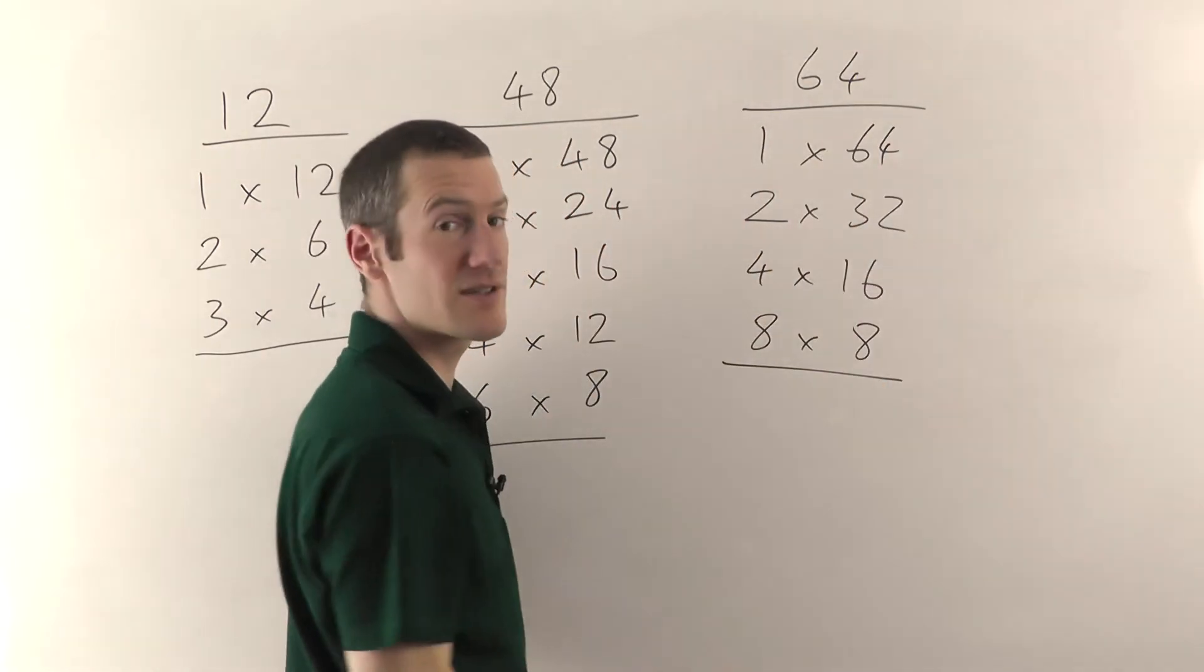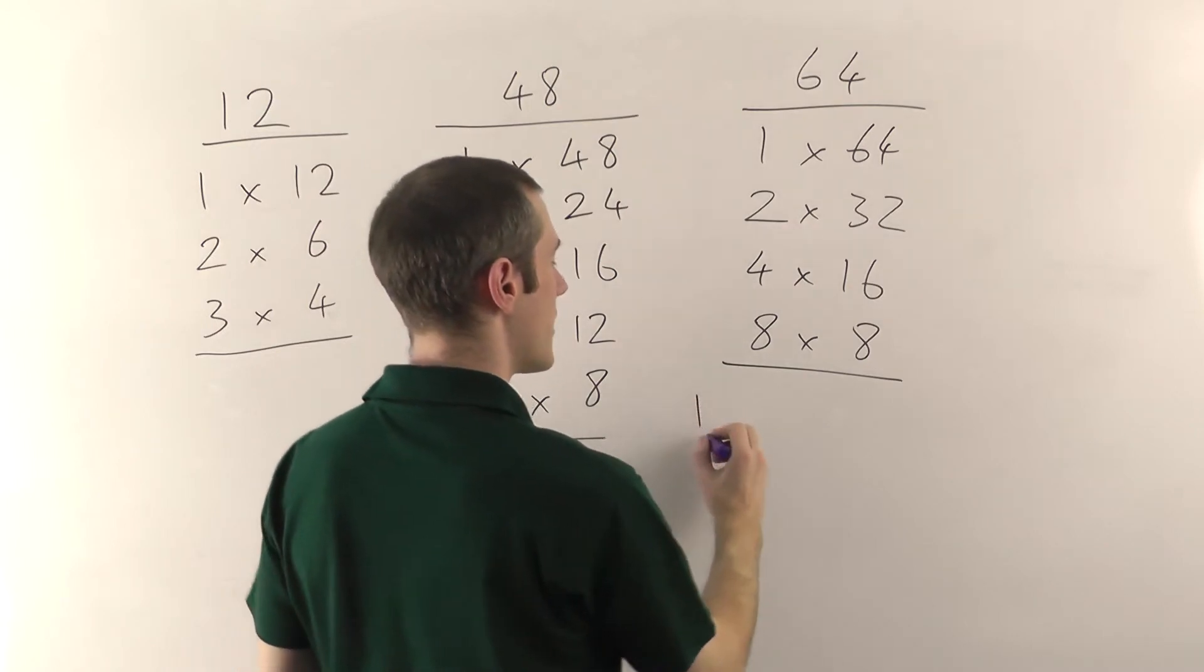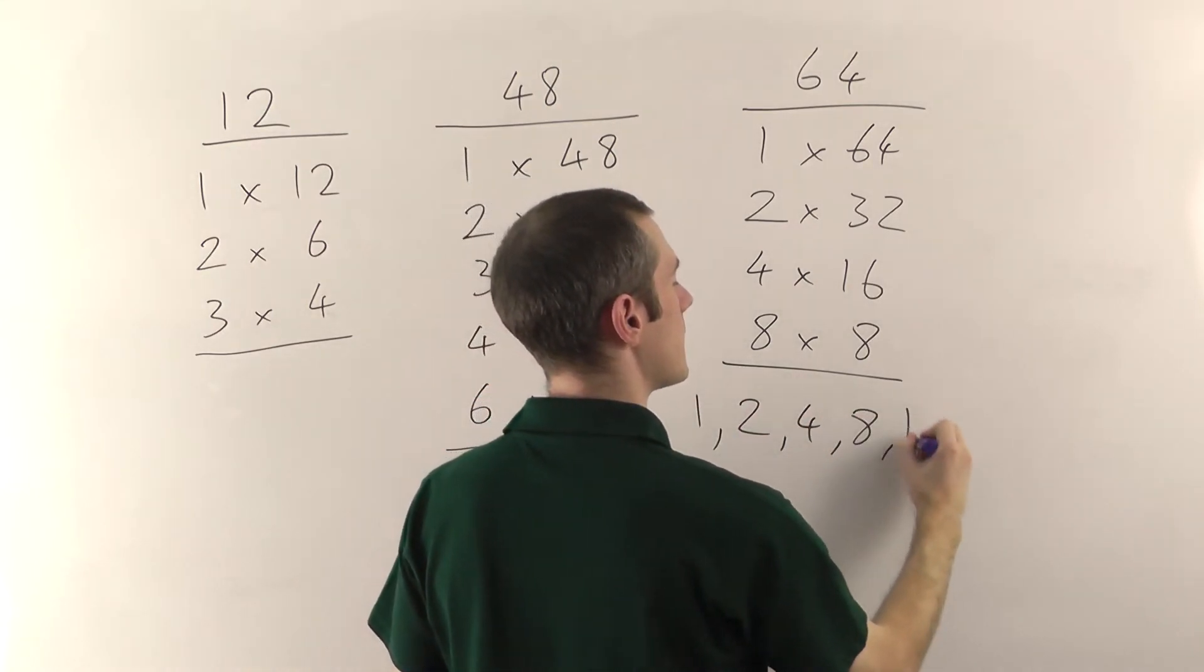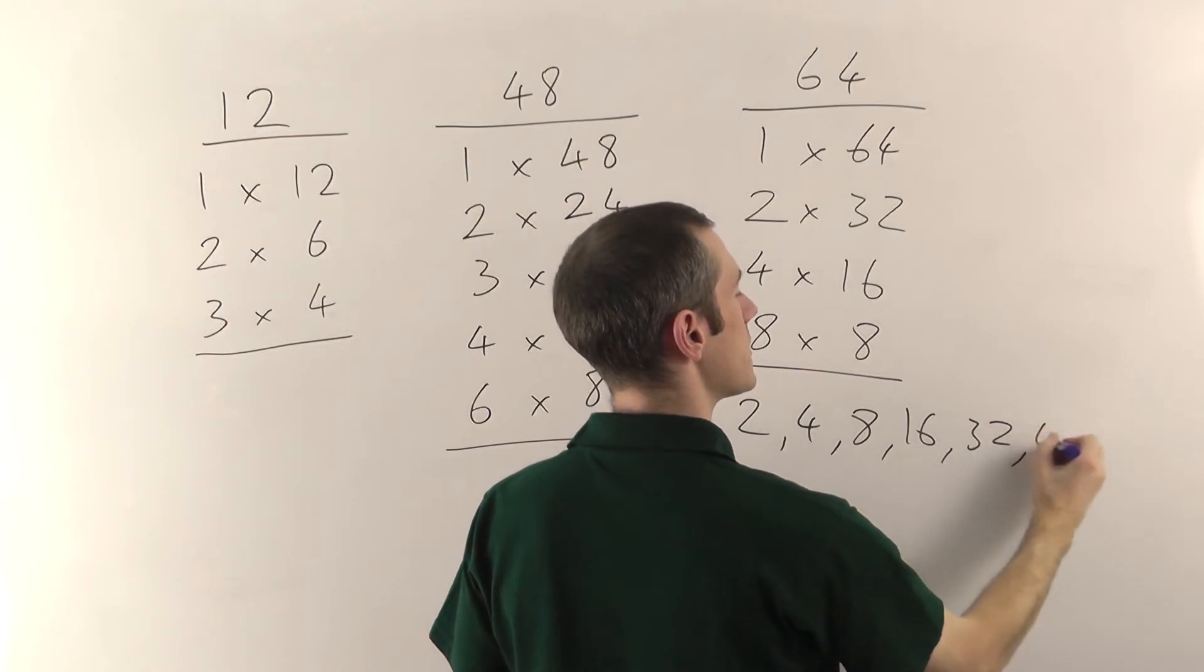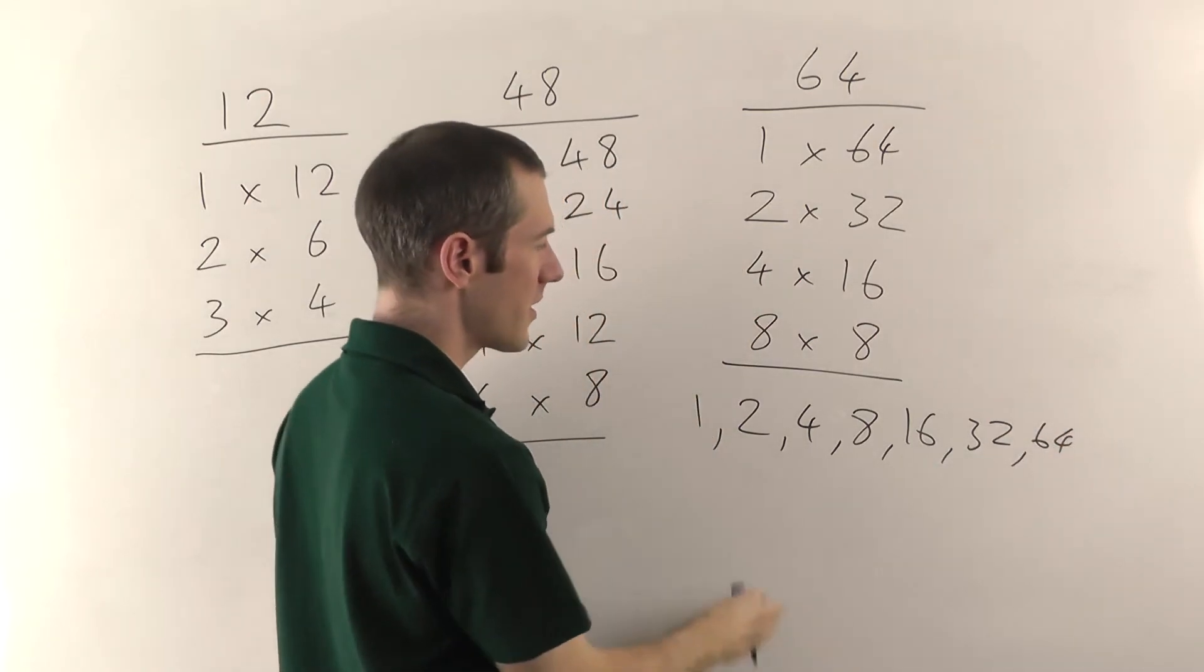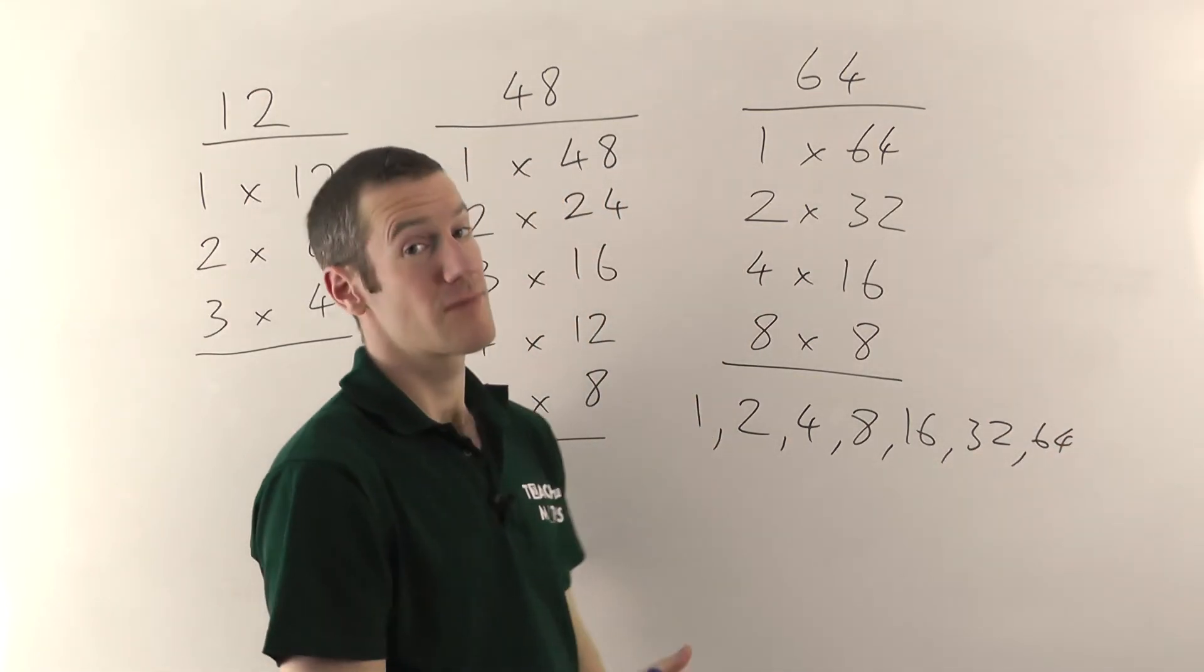So if you had to write out all the factors of 64 in order, you would write 1, 2, 4, 8, 16, 32 and 64. So altogether there are 7 factors of 64.